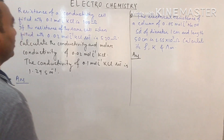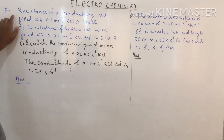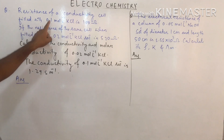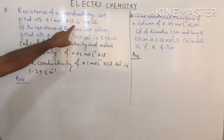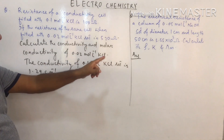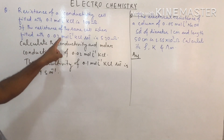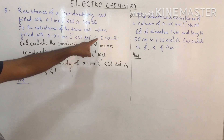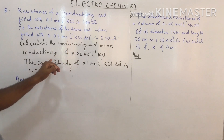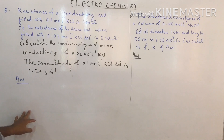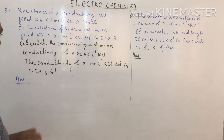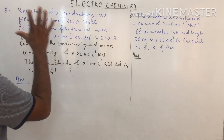Here is a question: the resistance of a conductivity cell filled with 0.1 mol/L KCl is 100 ohm. If the resistance of the same cell when filled with 0.02 mol/L KCl solution is 520 ohm, calculate the conductivity and molar conductivity of this solution. The question is a bit long but the answer is easy — only the formula is needed.